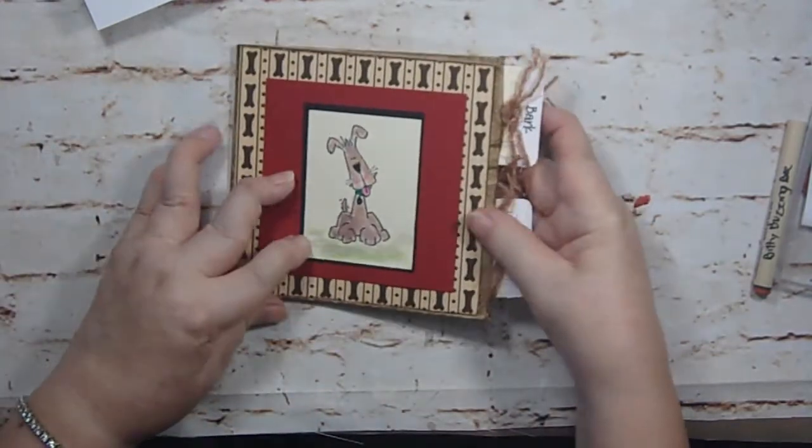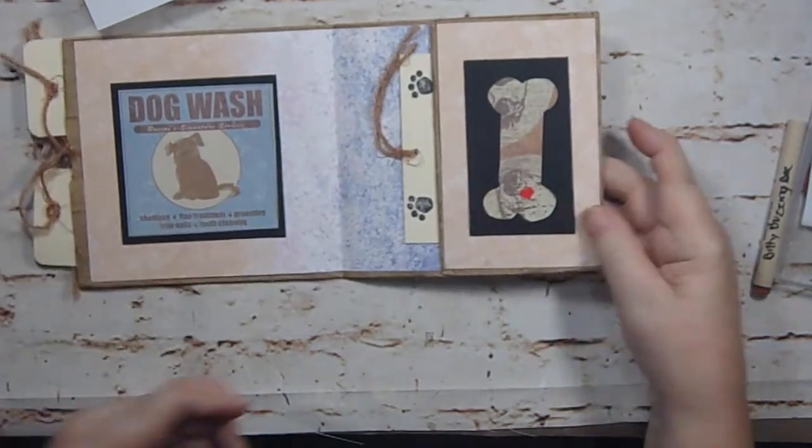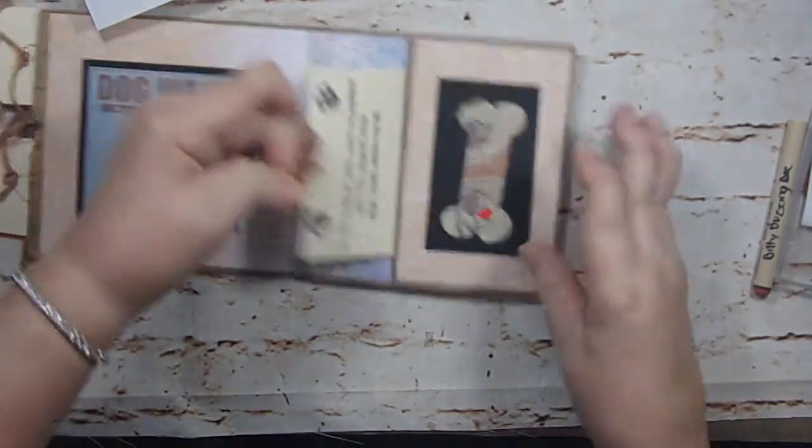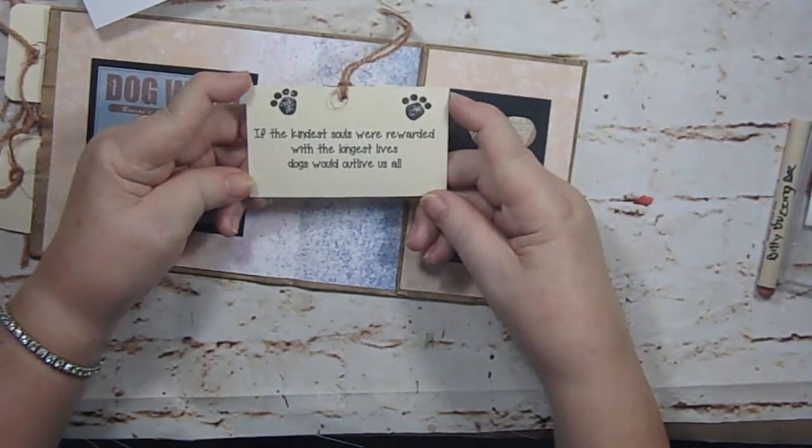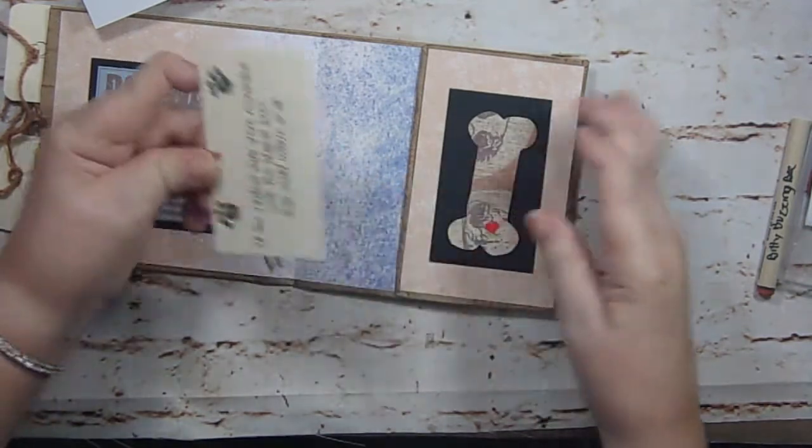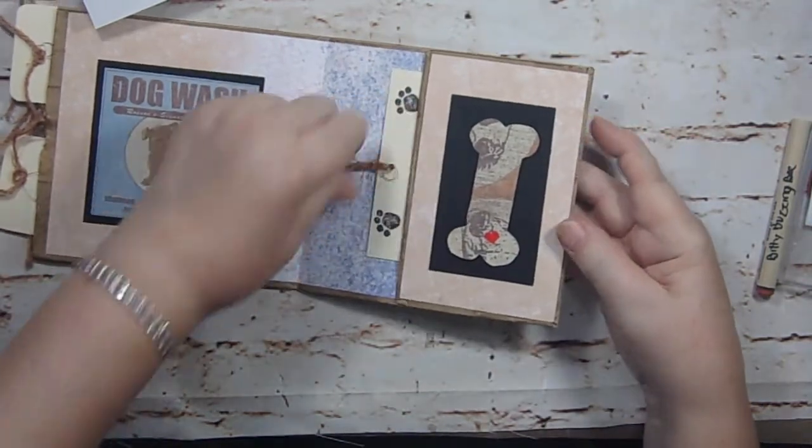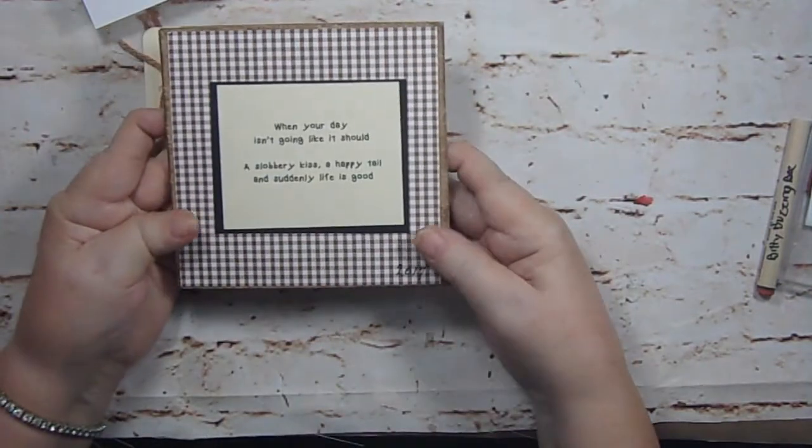Then she made me this. It is so sweet. It's a little mini album. I'll show you all the little components. This pulls out, and it says, if the kind of souls were rewarded with the longest lives, dogs would outlive all of us. That is the truth. I love that. And then little dog bone with a little heart on it.